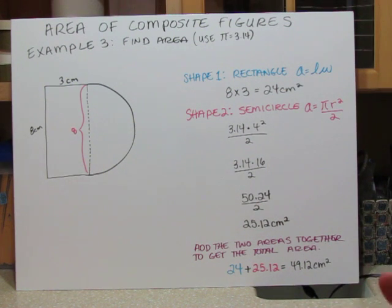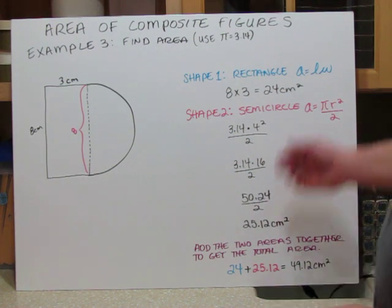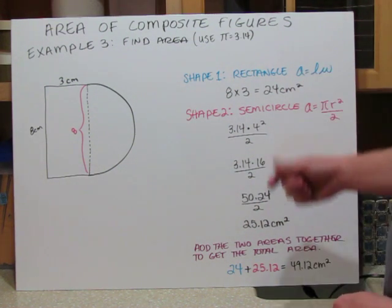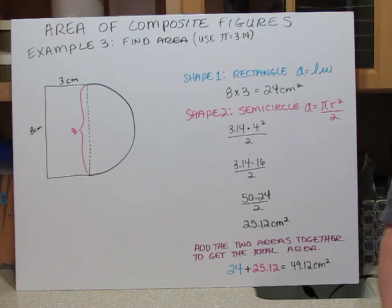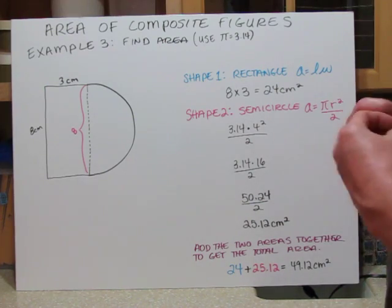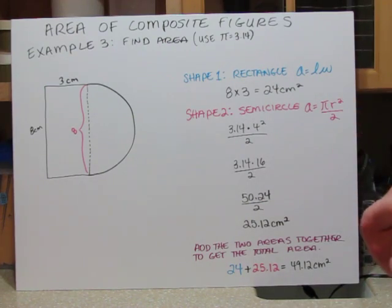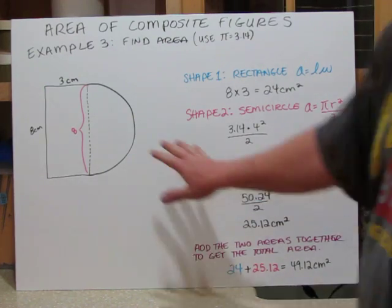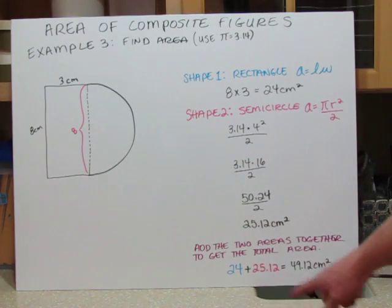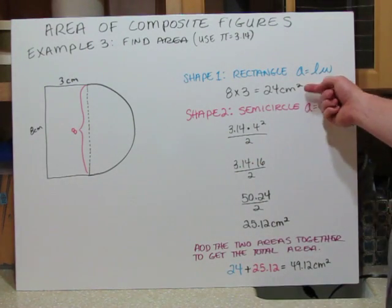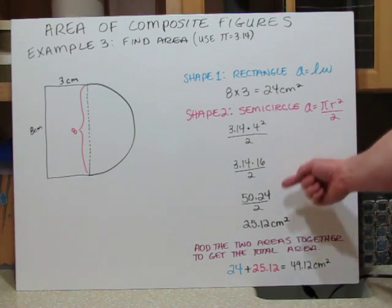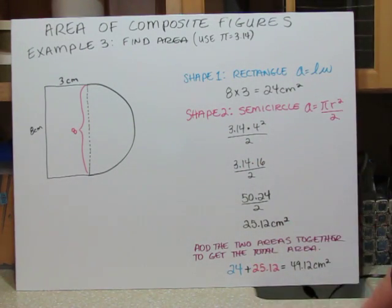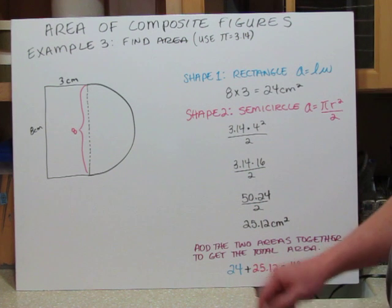That is the area of the rectangle and the area of the semicircle. We add them together: 24 plus 25.12 equals 49.12 centimeters squared as the total area of the shape.